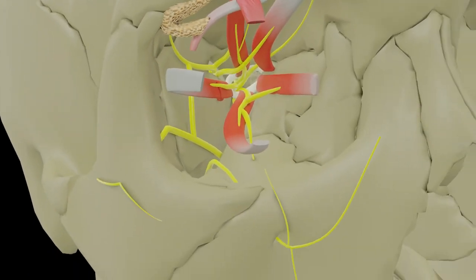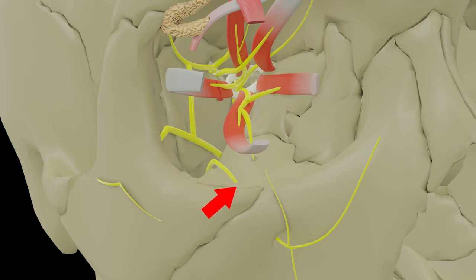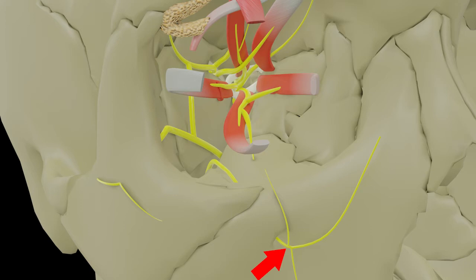Moving on to branches of the second or maxillary division of the trigeminal nerve. The infraorbital nerve is in fact a continuation of the maxillary nerve. It enters the orbit through the inferior orbital fissure, then runs along the floor of the orbit — first in the infraorbital groove and then in the infraorbital canal — and finally emerges from the infraorbital foramen, terminating by dividing into three terminal branches: palpebral, nasal, and labial. Other branches include the middle superior alveolar nerve and anterior superior alveolar nerve.